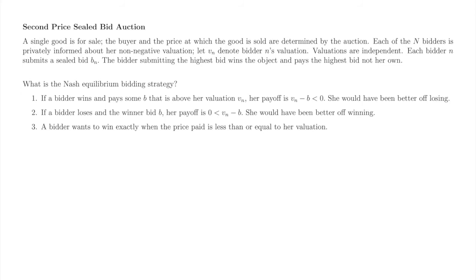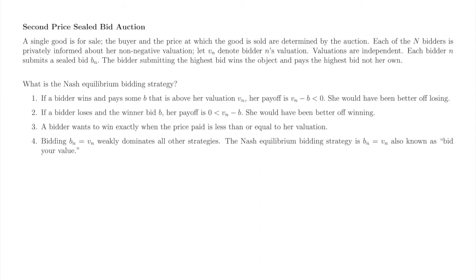Putting these observations together, bidder little n wants to win exactly when doing so means paying a price not more than her valuation, v_n. She achieves this goal exactly when she submits a bid equal to her valuation. This argument did not hinge on beliefs or other players' strategies. We have therefore found a Nash equilibrium in weakly dominant strategies.